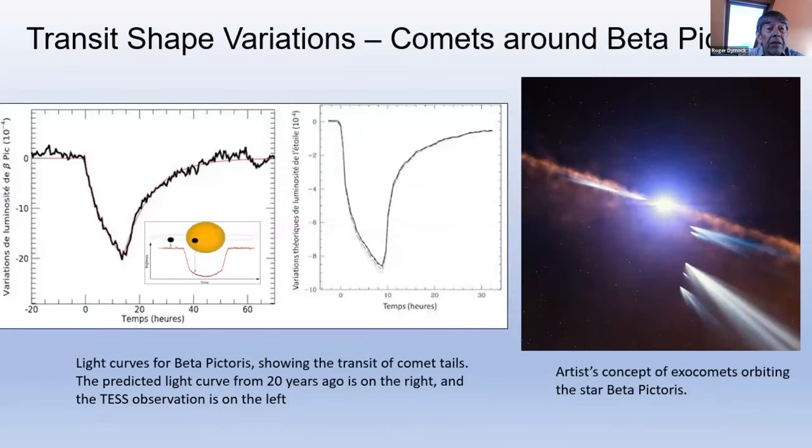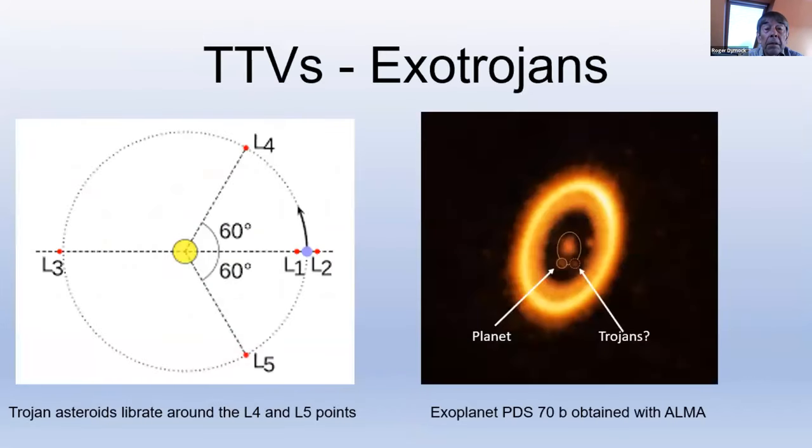Transit shape variations. Light curves for comets are very different than the usual U-shape associated with exoplanet transits as shown in this diagram. The predicted light curve is on the right and the test observation is on the left. And you can see how that differs from what I would call a normal transit. Much more V-shaped versus U-shaped. Exo-Trojans may actually come into the picture. The position of Trojans ahead and behind the planet are shown in the diagram on the left. The ALMA image shows the planet and another object, which could be a Trojan, a clump of matter condensed into a planet or planetary debris. Oscillations or libration of Trojans around the L4 and L5 points may cause transit timing variations.